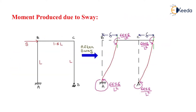Now we examine the moment produced due to sway in a frame. Consider a frame A, B, C, D where support A is fixed and support B is hinged. The member lengths of columns AC and BD are equal to L, and the member length of beam BC is 1.5L. A sway force of magnitude S is applied at joint B in the rightward direction. Due to this sway force, the frame deflects rightward by an amount delta.